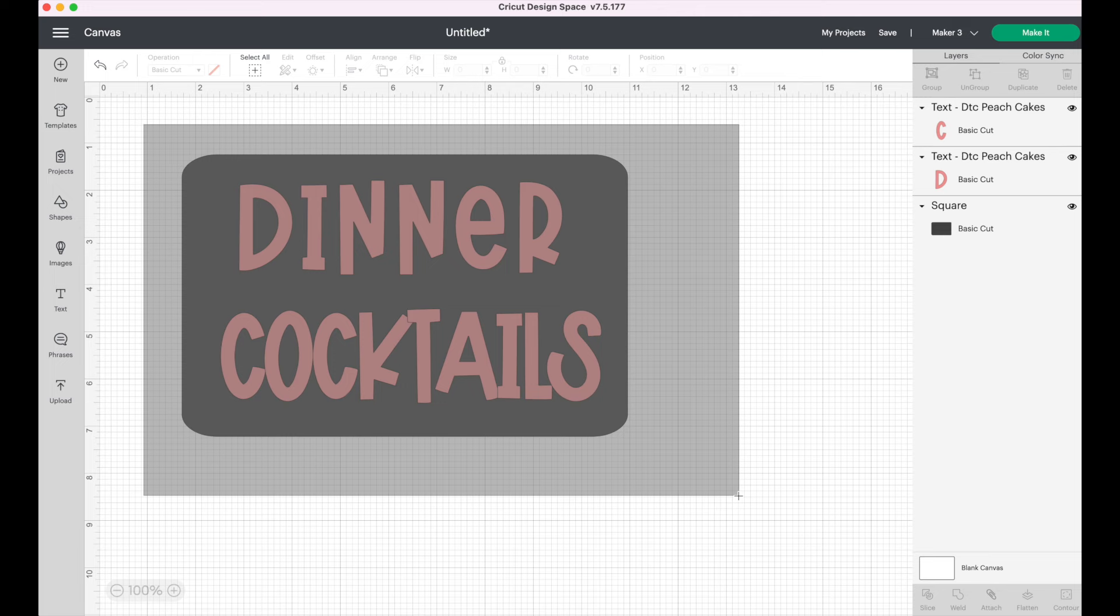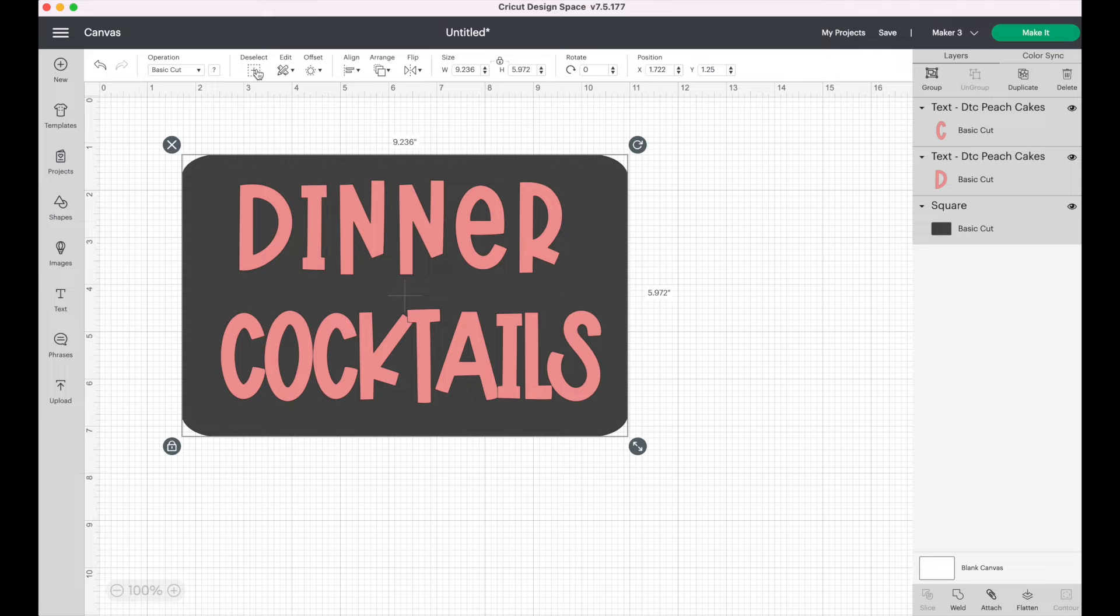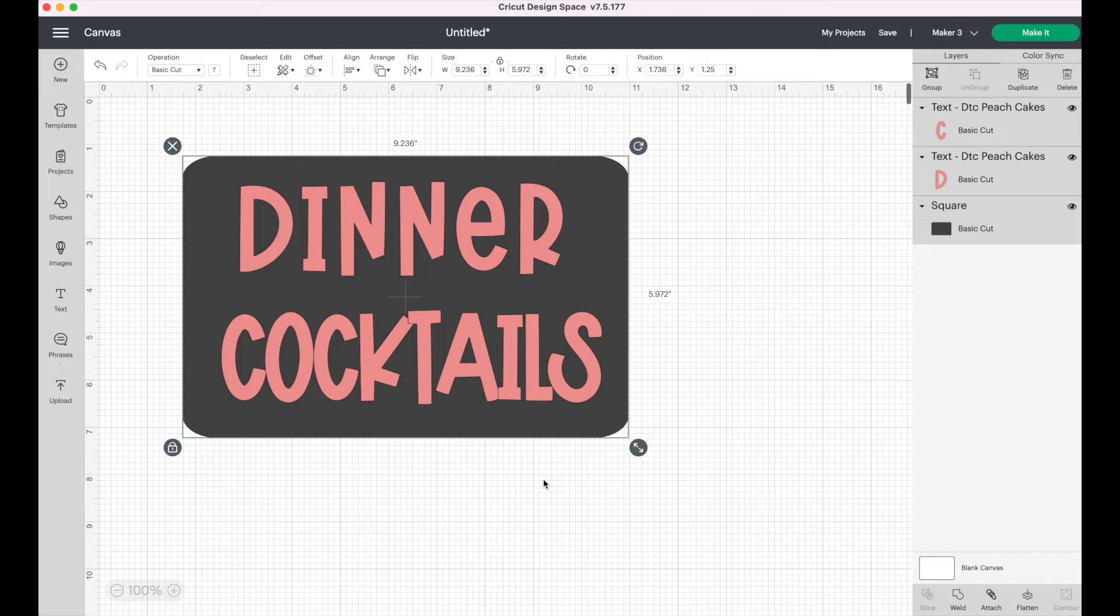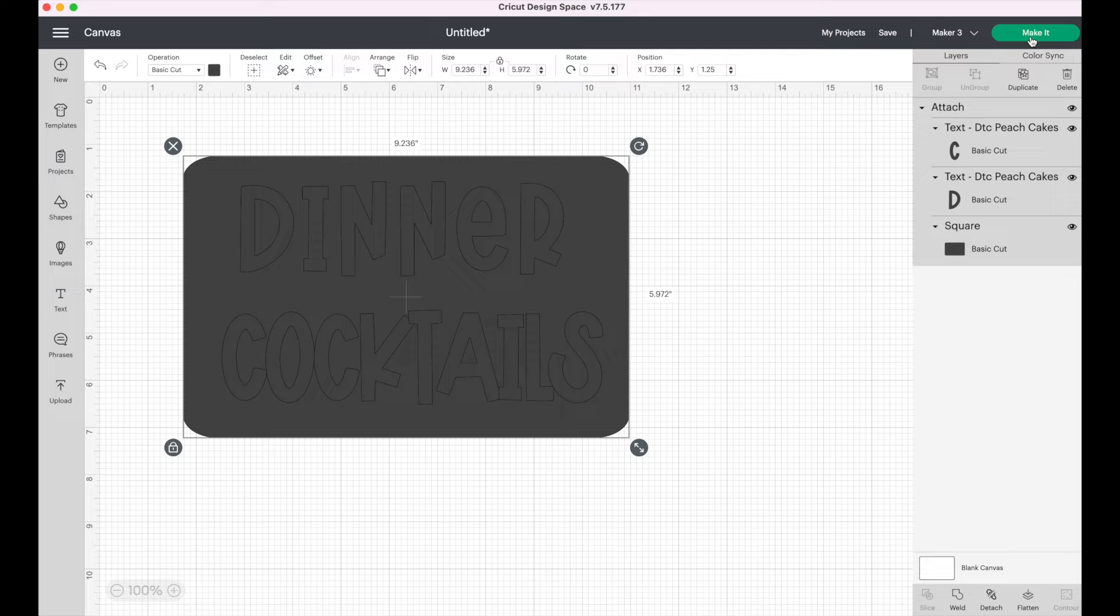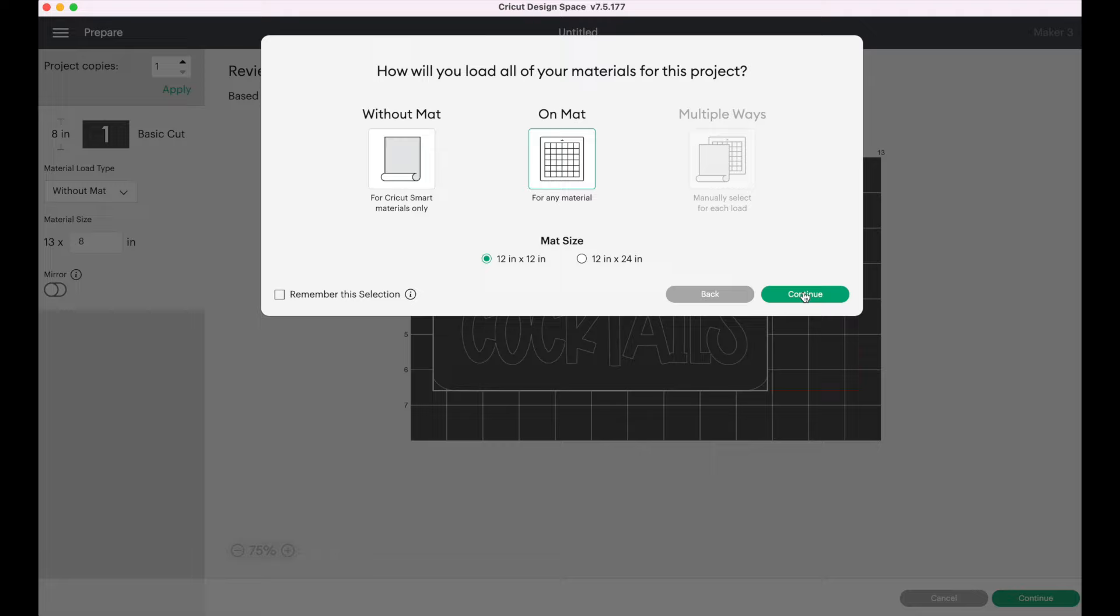So now I'm going to select everything. You can just click and drag over everything or you can use the select all button right here. And then I'm going to click attach, and that's going to keep everything together. So now we're going to go over to make it. We're going to cut on a mat, hit continue. And here you can see, I need a piece of vinyl that is approximately seven inches by 10 inches. So I'm going to cut that out and we're going to go ahead and cut this on the Cricut.